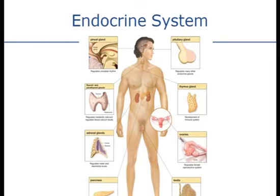The ovaries regulate the female reproduction system — they secrete eggs or ovums as well as female hormones like estrogen and progesterone. The adrenal glands are located atop the kidneys and secrete epinephrine, norepinephrine, and aldosterone — hormones that help regulate water, electrolytes, and blood pressure. The pancreas helps regulate blood sugar levels by secreting not only insulin but also glucagon. Glucagon raises blood sugar and insulin lowers blood sugar.